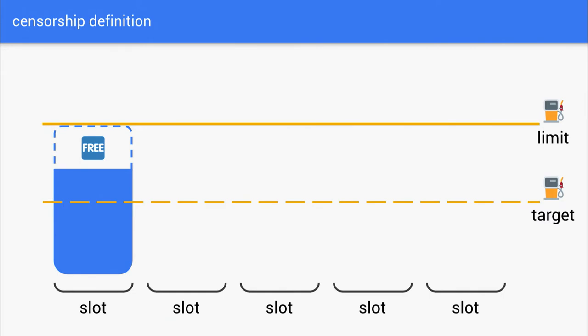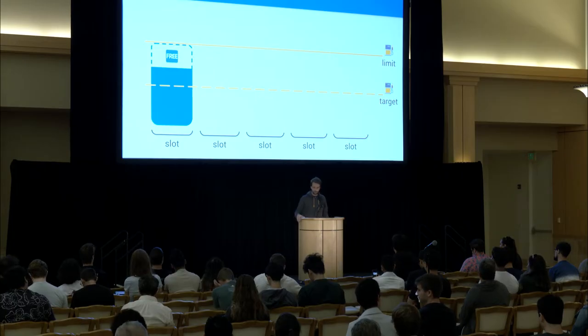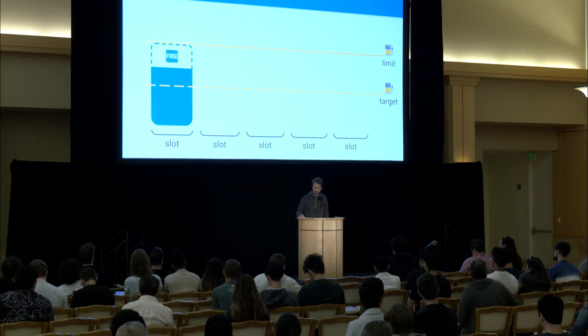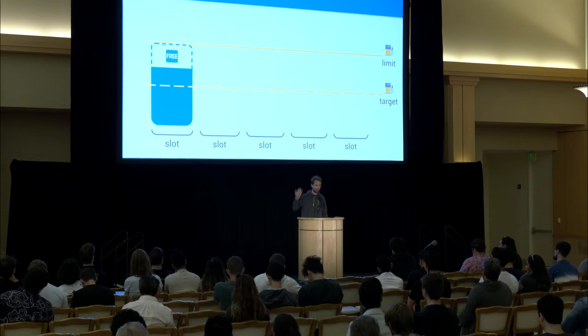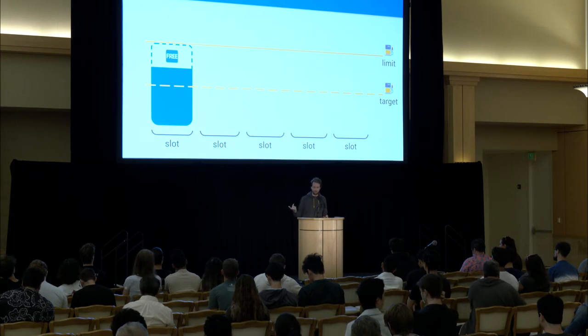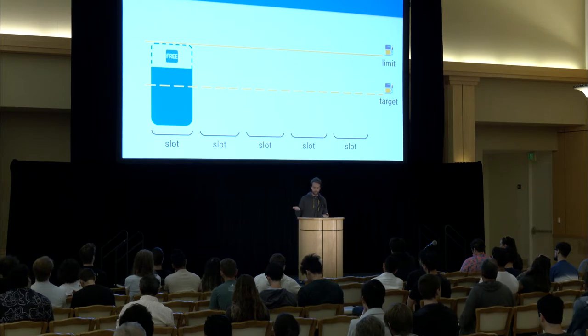What is censorship? In Ethereum, we have a very clean way of defining it, and this is an underappreciated feature of EIP-1559. With EIP-1559, we have dynamic blocks. We have a target gas of 15 million gas and a gas limit which is twice that. Blocks can vary up to the limit, which is twice the size of the target.